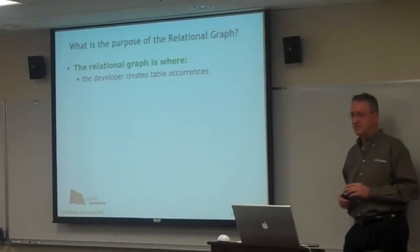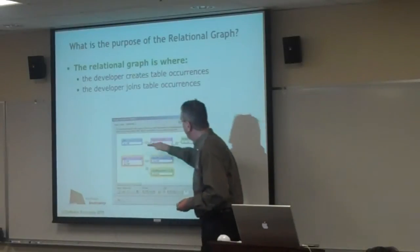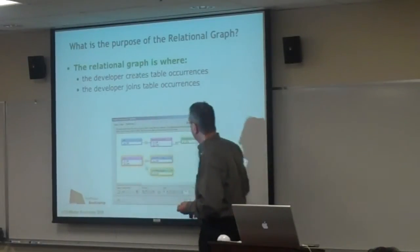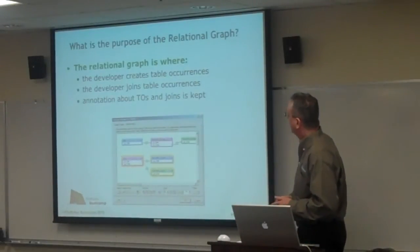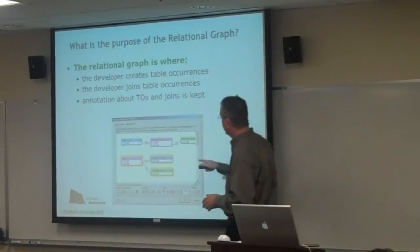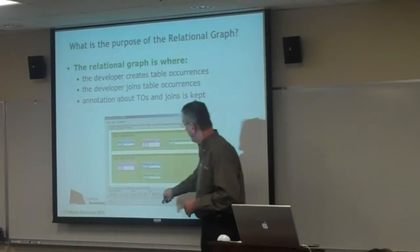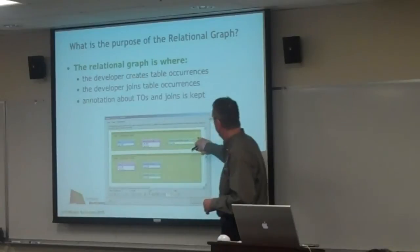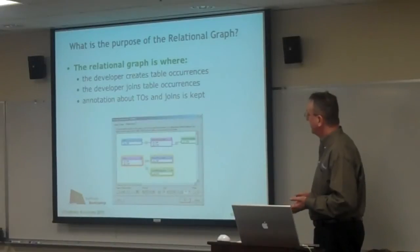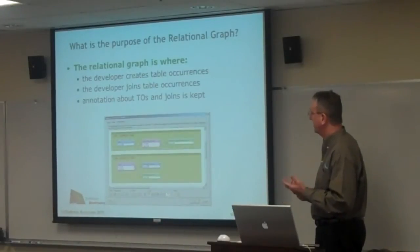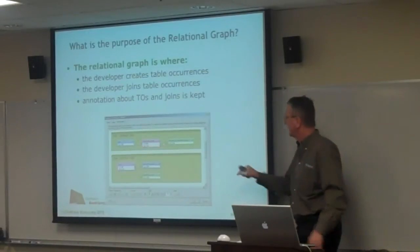The relational graph is where a developer does certain basic things — where you create table occurrences and join them. Here you can see two table occurrence groups that are discrete. It's also where annotation or comments about the table occurrences in the groups is kept. You can use comment blocks, color them, and place them behind the table occurrence groups to make it clear that it's a group — or shrink them and use them as breakers between groups.